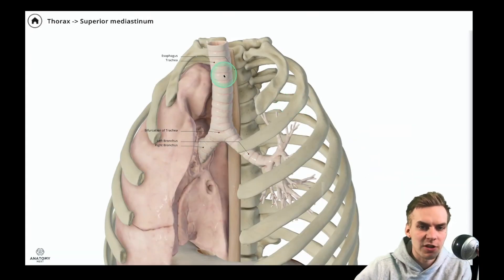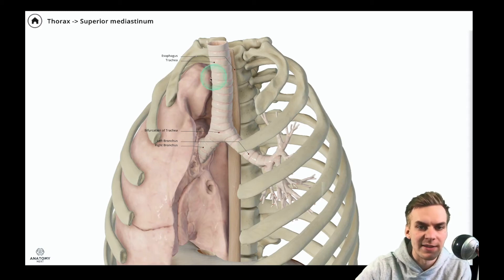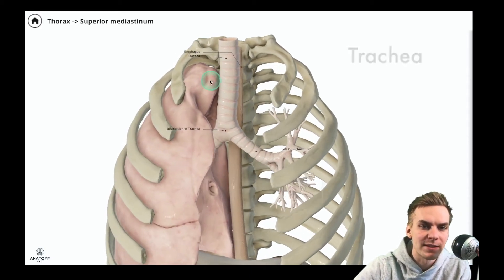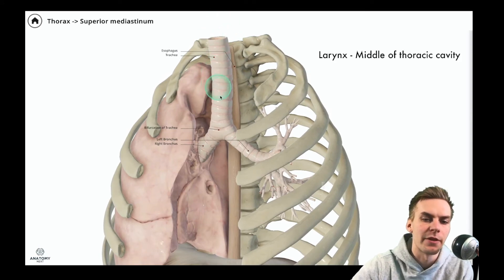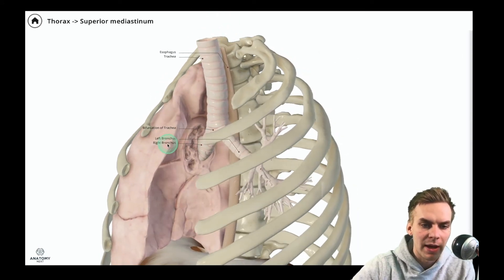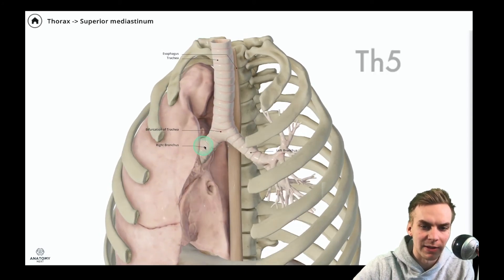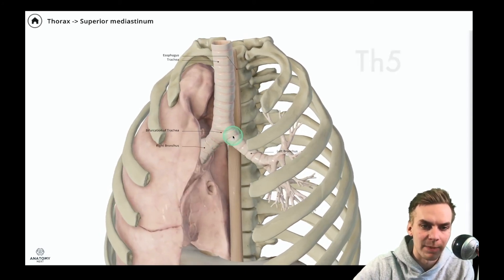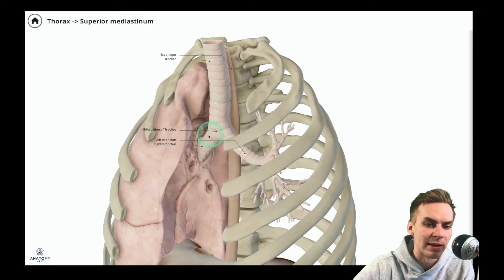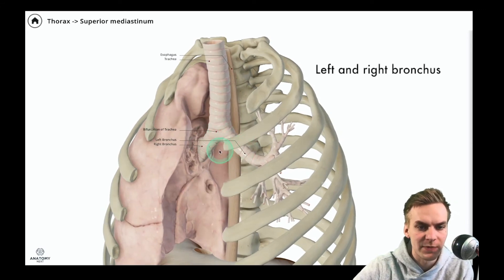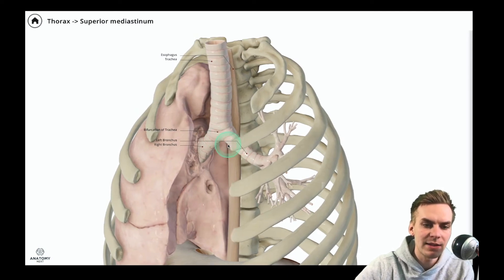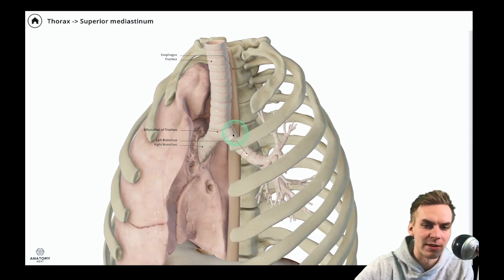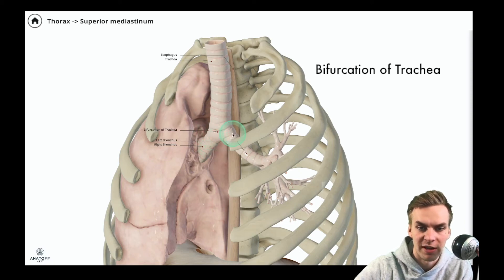And one more structure that we must review in the context of superior mediastinum is the trachea, a short and flexible air tube extending all the way from the larynx down to the middle of thoracic cavity. And at the level of approximately fifth thoracic vertebrae the trachea divides into the left and right bronchus. So these are the two main bronchi of the human body. And this point where the trachea divides is called the bifurcation of trachea.